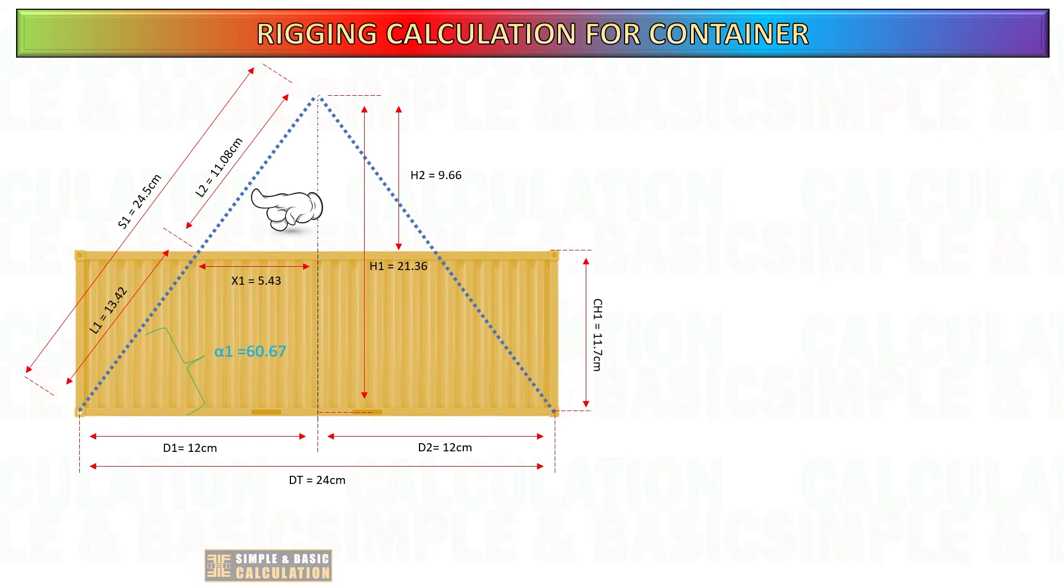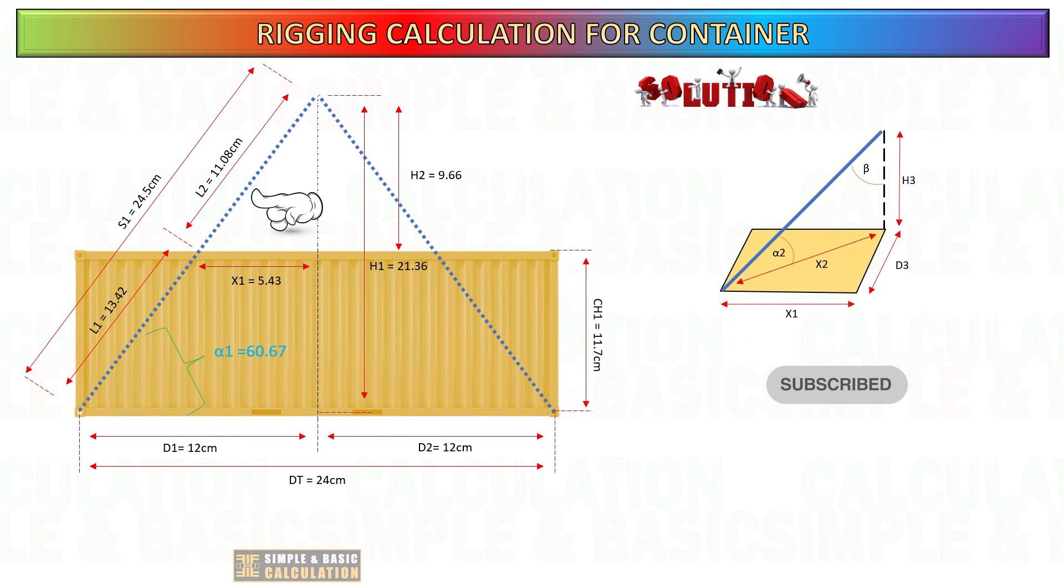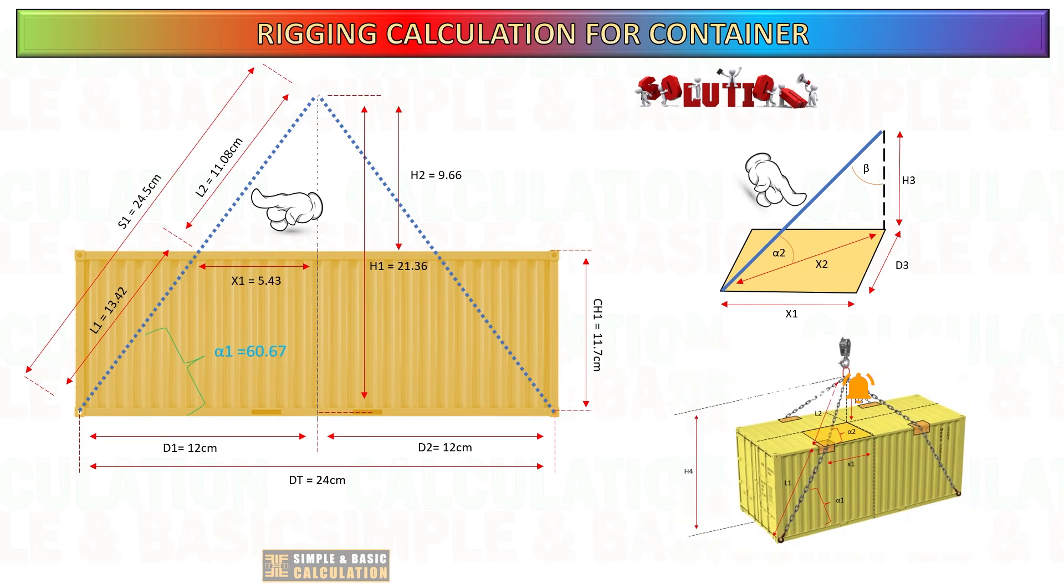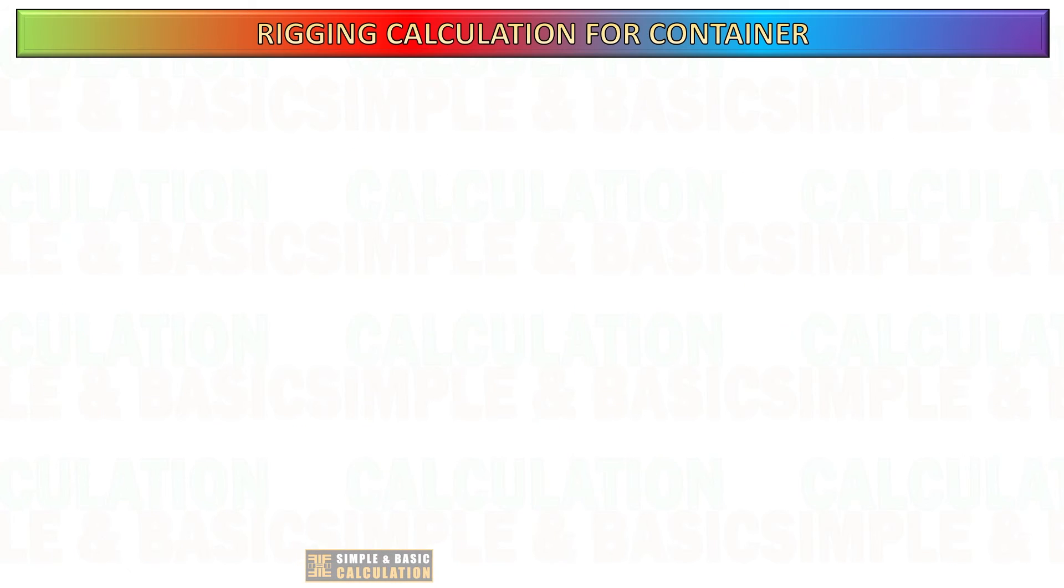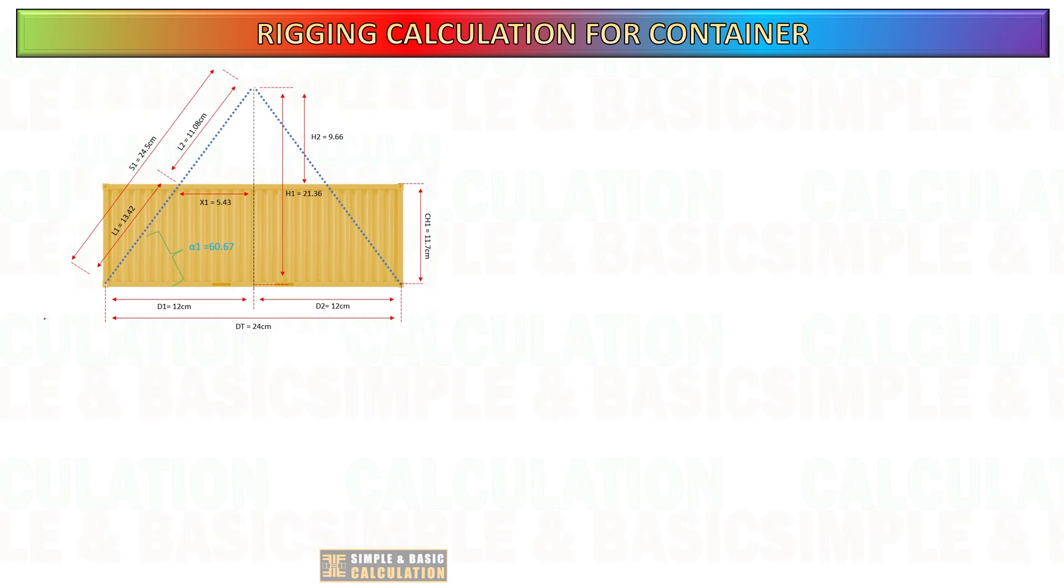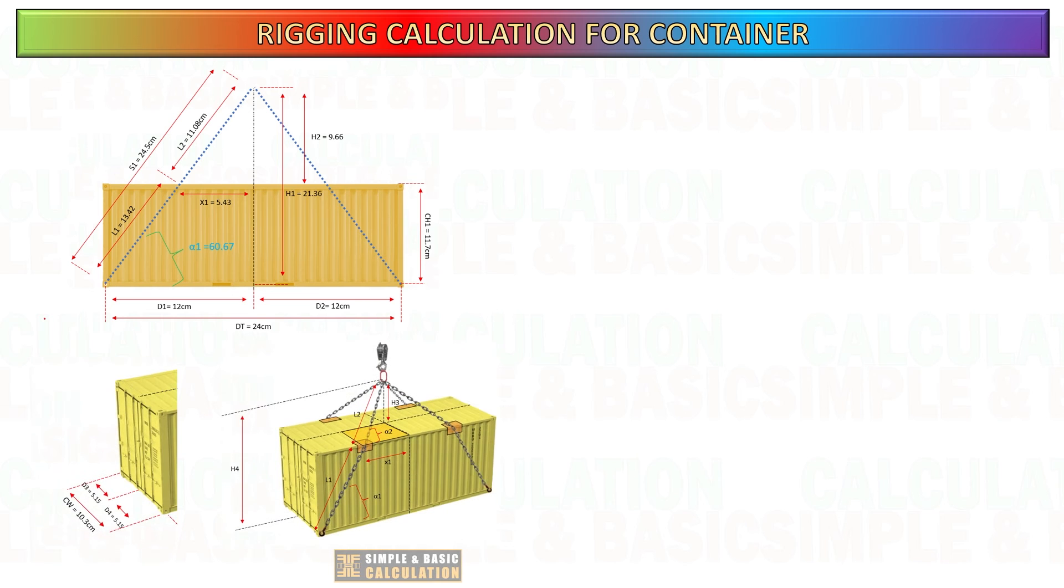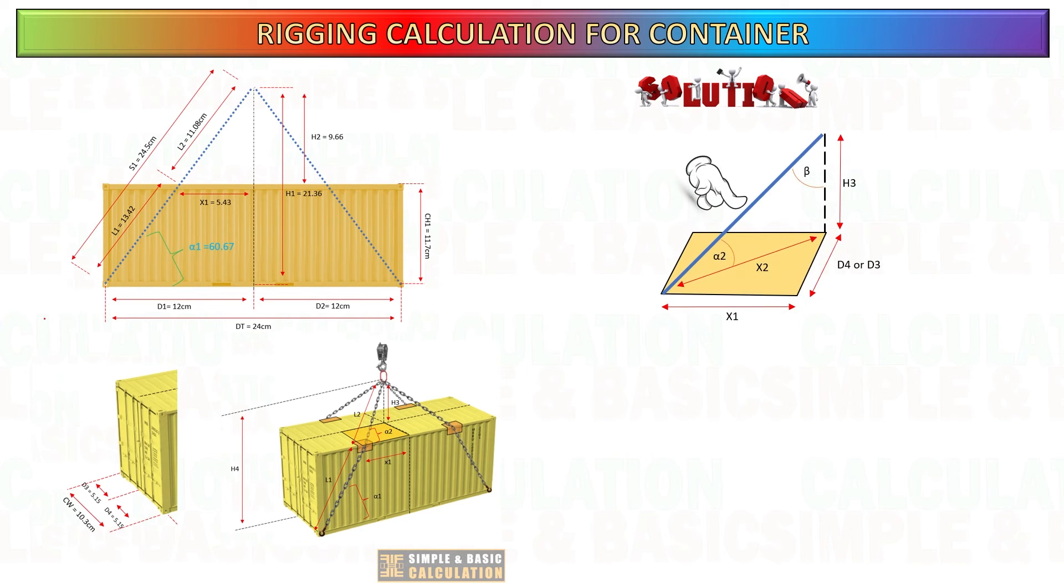Now we know the L2 and X1, which represent the length of rigging on top and distance of sling start to bend from center of gravity. We can do the calculation to find the sling angle on top and height of the sling from top of the container. Find the X2 or the diagonal length of sling from center of the gravity. Follow the formula as shown in the slide.